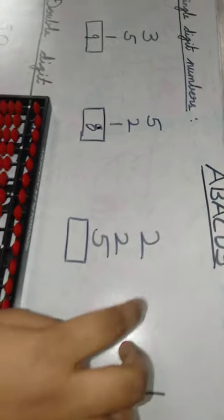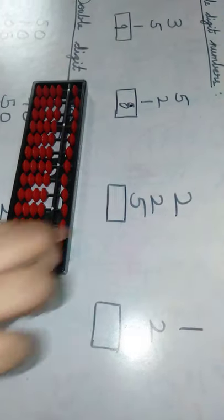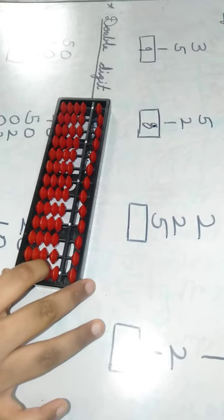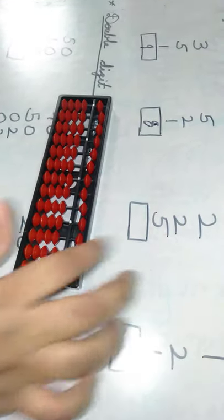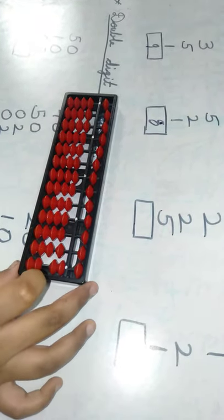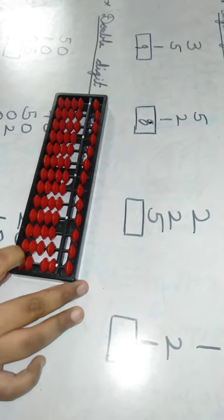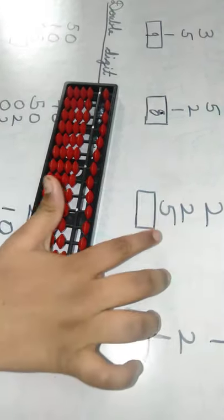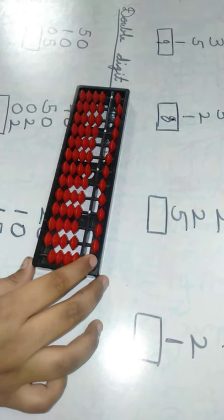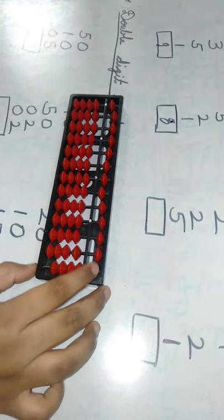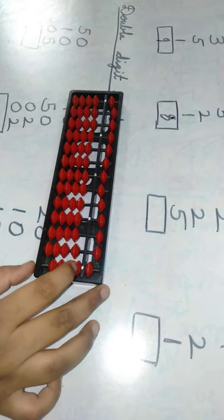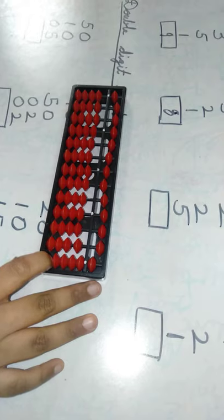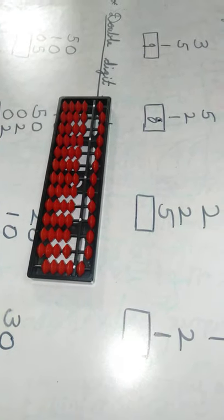Here 2 — we have to move 2 beads in the 1's column. Plus 2 — we have to move again 2 beads in the 1's column: 1, 2. Now we have to move the upper bead, which means 5. So 5 plus 1 is 6, plus 1 is 7, plus 1 is 8, plus 1 is 9. We have to write here 9.